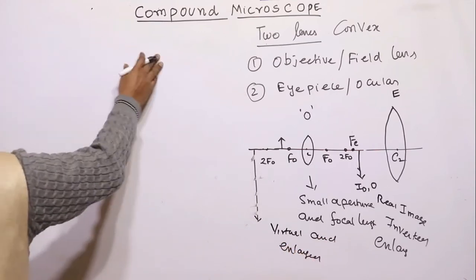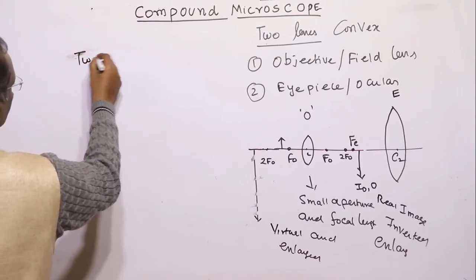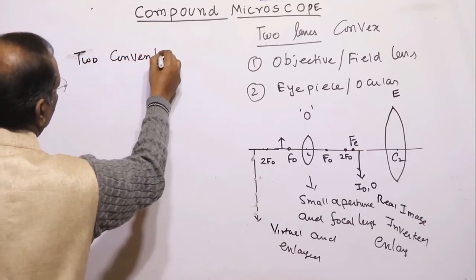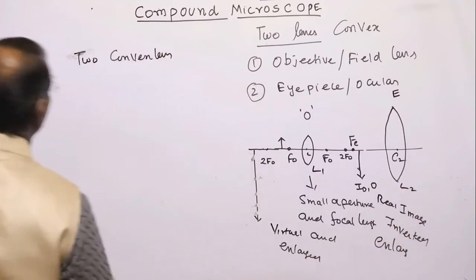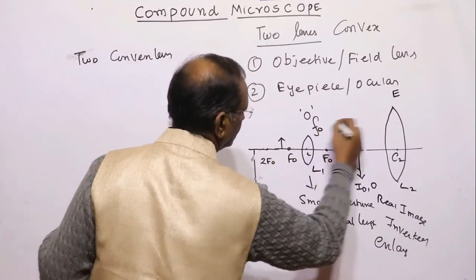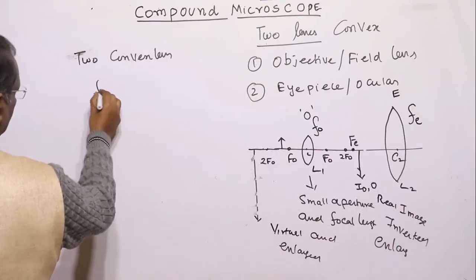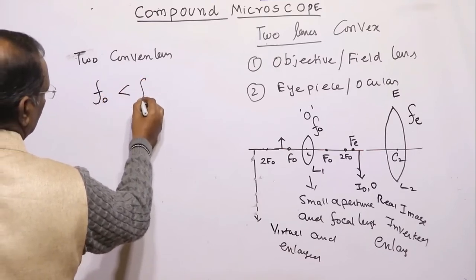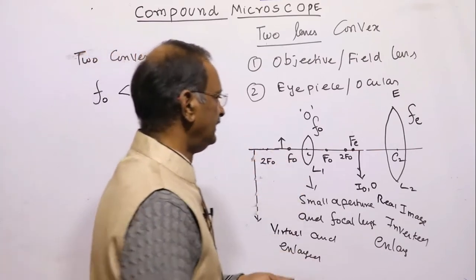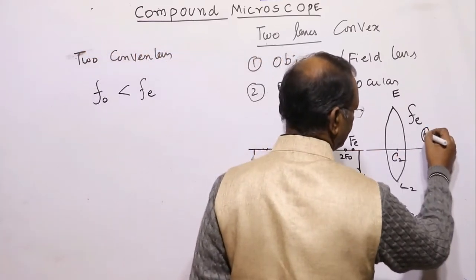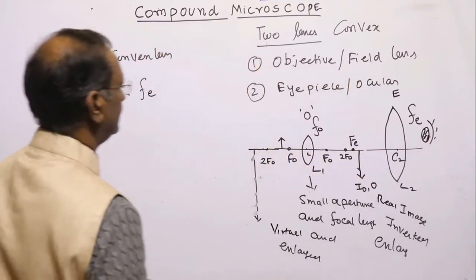Therefore, the compound microscope consists of two convex lenses: lens 1 (objective) with focal length f-naught, and lens 2 (eyepiece) with focal length f-e. The focal length of the eyepiece is greater than that of the objective. The lens facing the object is called the objective, and the lens facing the eye is called the eyepiece.